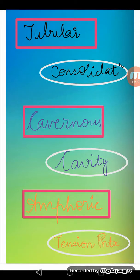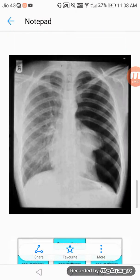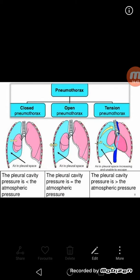Looking at images of breath sounds: bronchial breath sounds are tubular (high pitch, seen in consolidation/pneumonia), cavernous (low pitch, seen in cavity), and amphoric (metallic quality, seen in tension pneumothorax). Pneumothorax can also be classified as closed (pleural pressure less than atmospheric), open (equal to atmospheric), or tension (greater than atmospheric pressure).